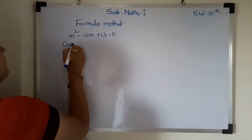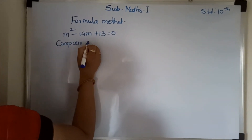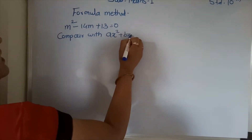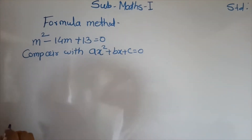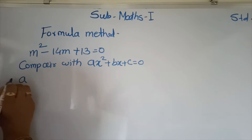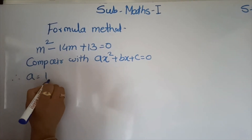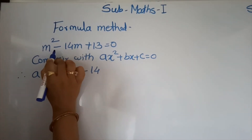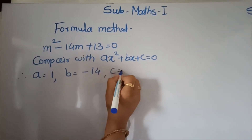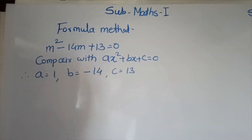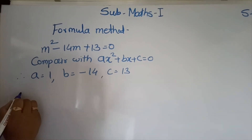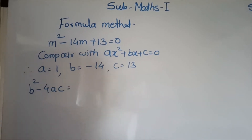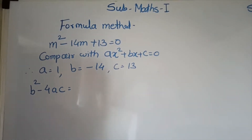Compare with ax square plus bx plus c is equal to 0. Therefore, a is equal to 1, b is equal to minus 14, c is equal to 13. Then we calculate first b square minus 4ac.